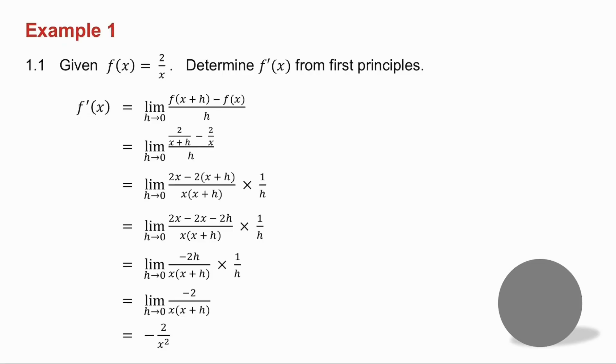They've asked you to determine the derivative from first principles, so remember with first principles you have to use that formula. You get f of x plus h, you minus f of x, divide it by h, and you take the limit as h tends to 0. Get a common denominator on the top, remember that dividing by h is the same as multiplying by 1 over h. Multiply the brackets at the top, collect together like terms, the h's cancel, and then what you do is you make h tend to 0, and you get an answer of minus 2 over x squared.